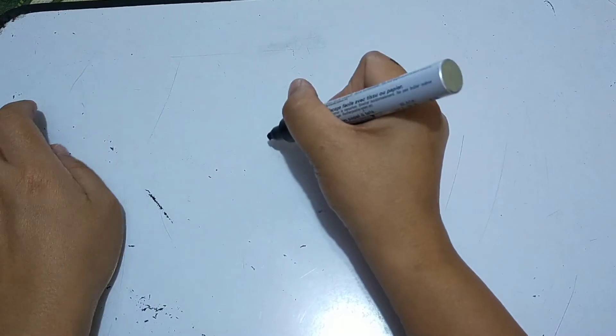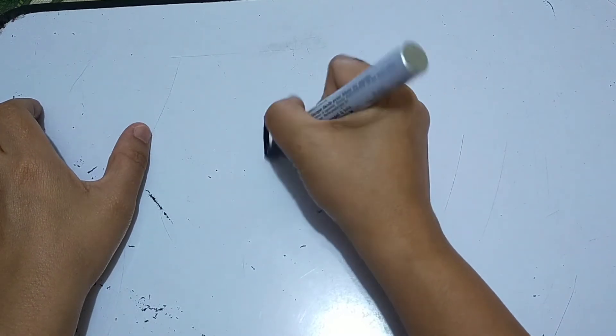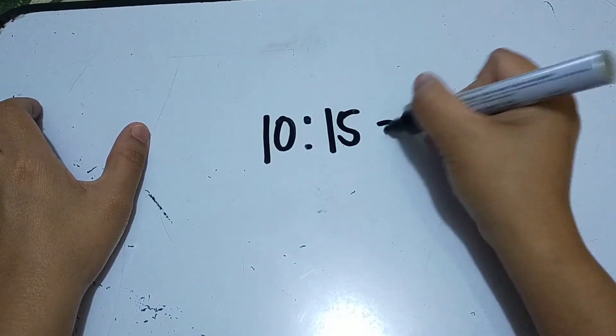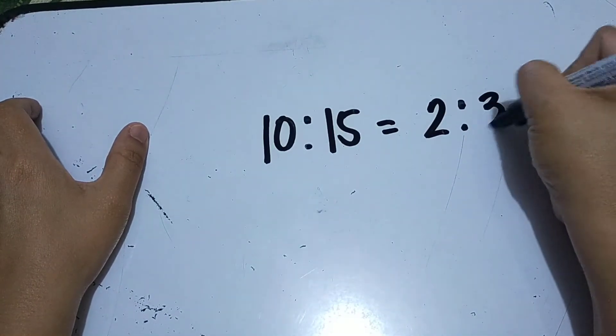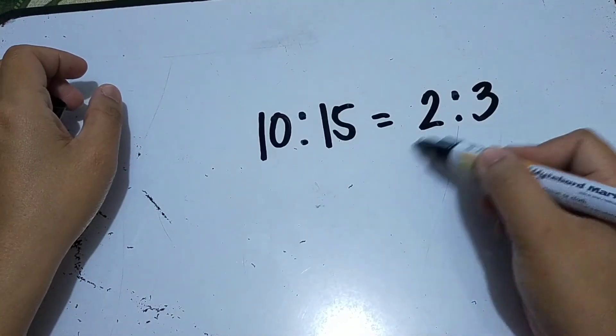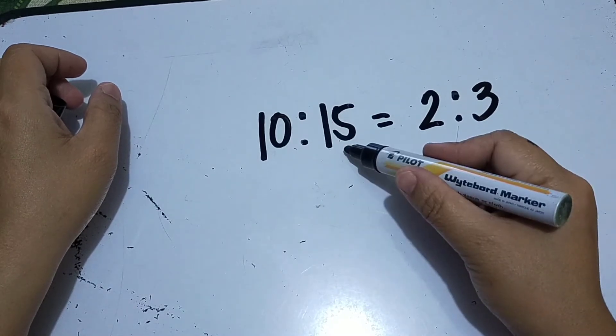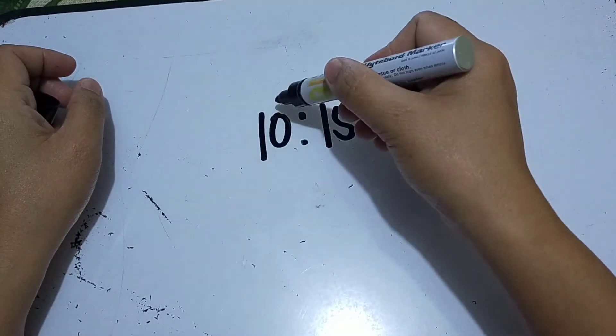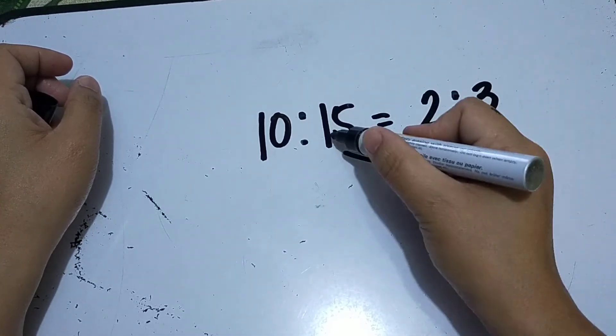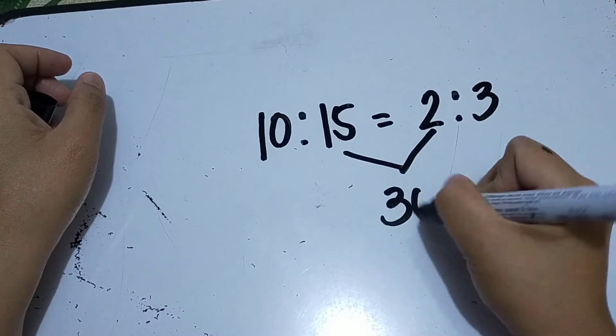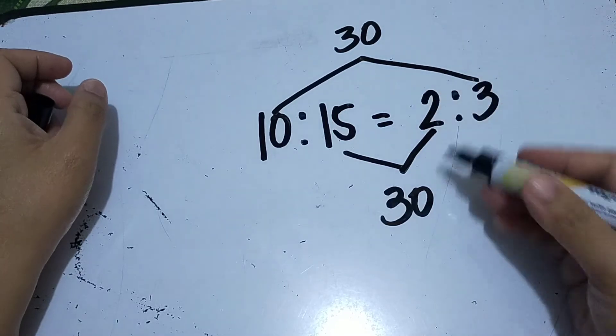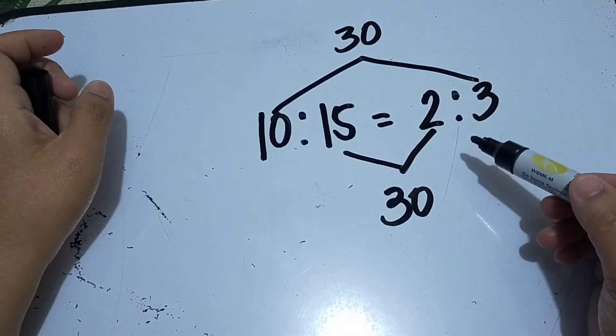Another. How about if it's in colon form? 10 is to 15 is equal to 2 is to 3. When the given is like this, just multiply the means—the middle numbers. And then the extremes—the outer numbers. Multiply the means: 15 times 2 is 30. Multiply the extremes: 10 times 3 is 30. Therefore, the ratio is equivalent.